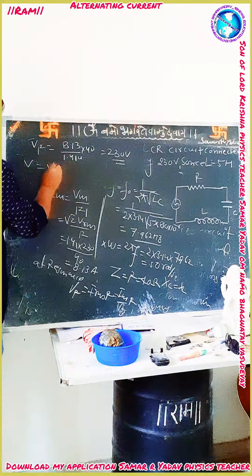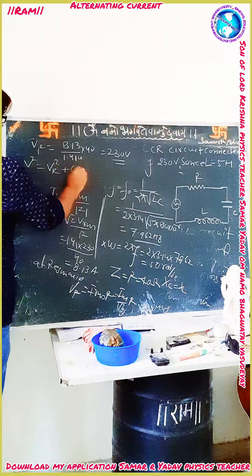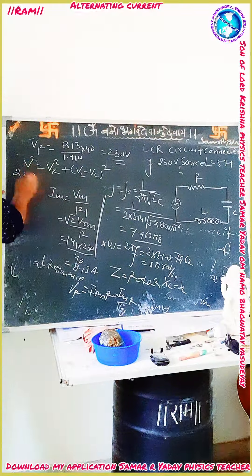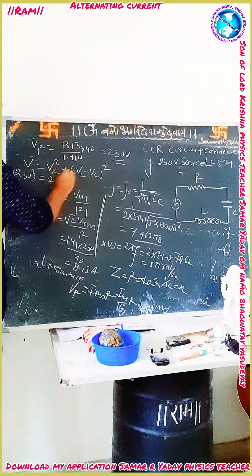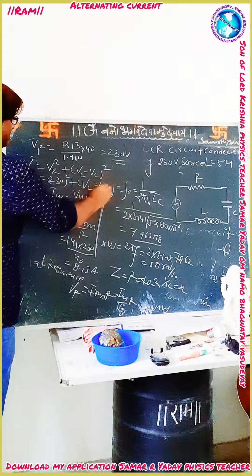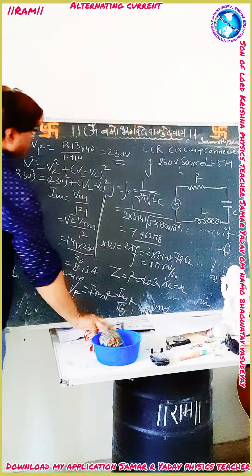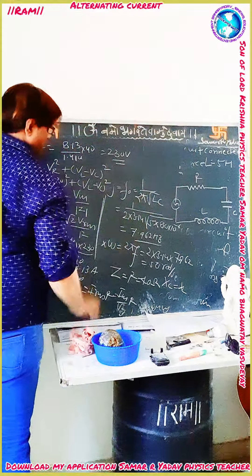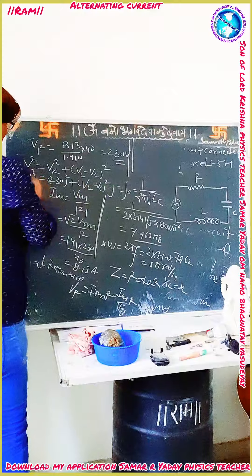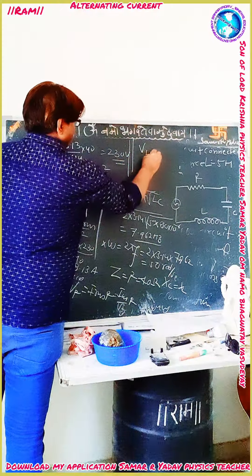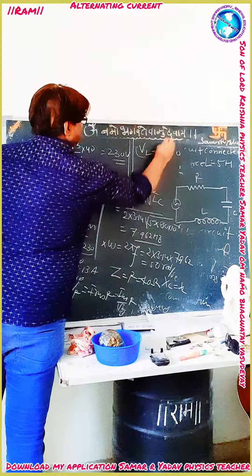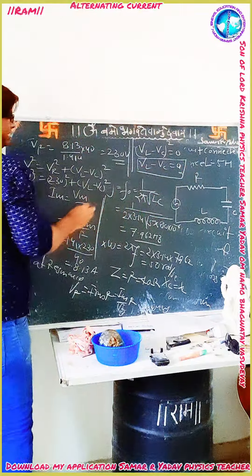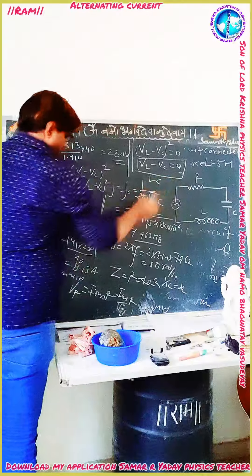Now the potential drop at resonant frequency: V² is equal to Vr² plus (VL − VC)². Here V is given as 230, so 230² equals 230² plus (VL − VC)². Therefore (VL − VC)² equals zero, which means VL − VC equals zero. So the potential drop across the LC circuit is zero.